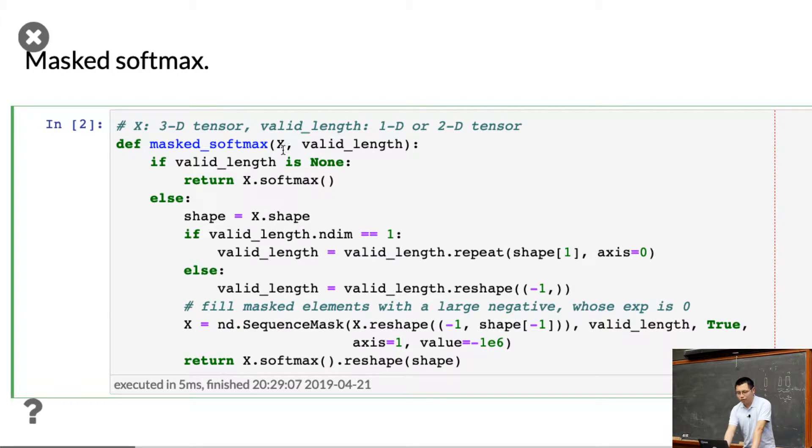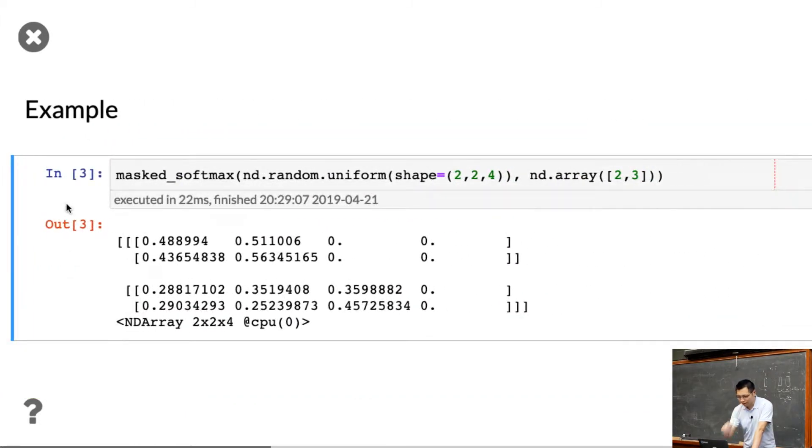So this is about this function. The inputs are very similar. Given a bunch of list of keys, given valid length, we can mask the thing you want.